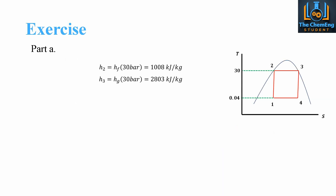For part A, we need to determine the enthalpy at these given pressures from the steam table. At 30 bar, Hf — the enthalpy of the liquid — is 1008 kJ/kg. Hg is the enthalpy of the vapor at 30 bar. These values correspond to points 2 and 3 on our diagram.